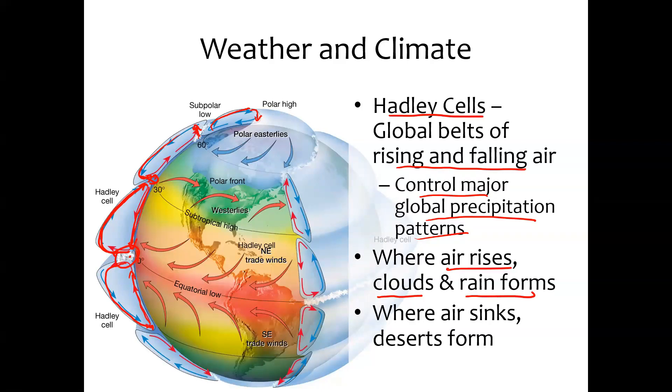But as it rains out, the air becomes much drier. That dry air moves through the atmosphere until it hits about 30 degrees latitude and then it sinks. It's increasing its pressure, doesn't have much moisture, and as a result there's not much rain at 30 degrees north and south. Where that sinking air is, those desert belts form.